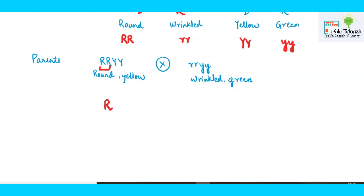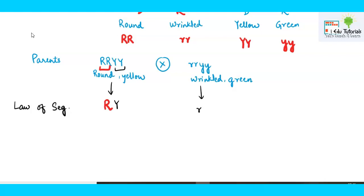During gamete formation, out of the two capital R's only one R will go into the gamete, and out of the two Y's only one Y will go — this is the law of segregation. Similarly, the law of segregation applies to the female parent, giving gametes with small r and small y. When fertilization occurs, the male gamete unites with the female gamete, forming the F1 generation with genotype capital R small r capital Y small y.